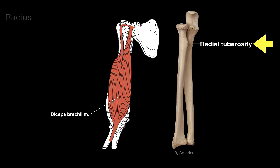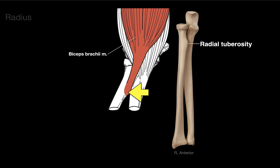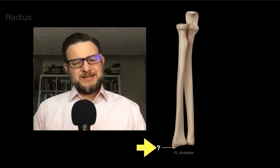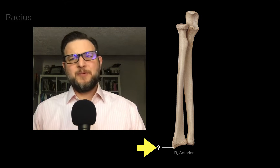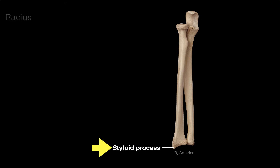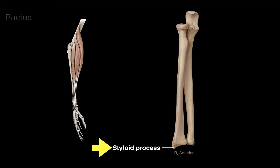The radial tuberosity has a special function: it serves as the insertion for the biceps brachii muscle. Next is this landmark that looks like the tip of a pen — we call it the styloid process, which serves as an attachment for the brachioradialis muscle.